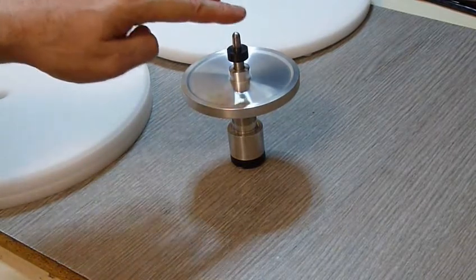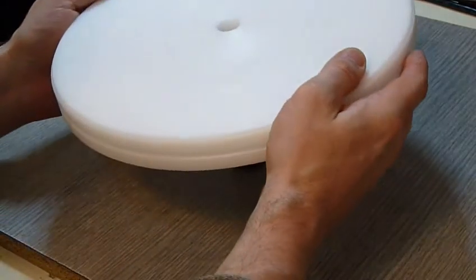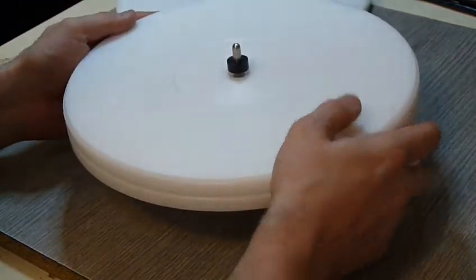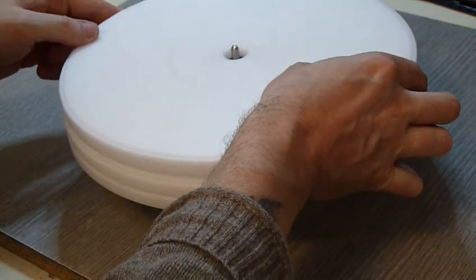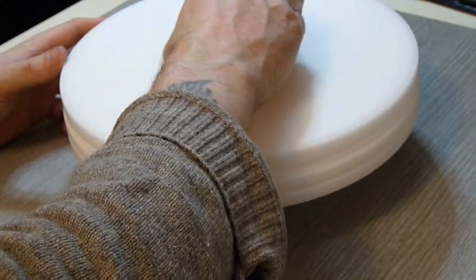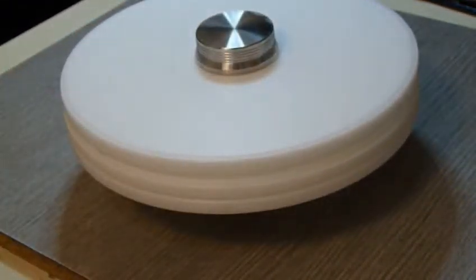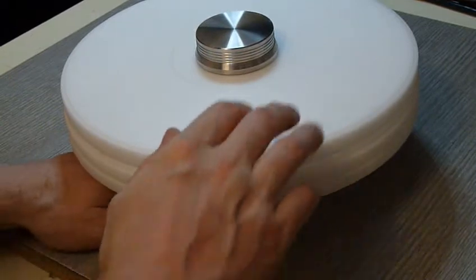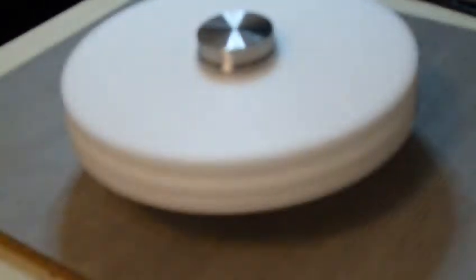So I'll stick the platters on it and we'll spin it up and have a look at it. Let's stop that, put the first platter on it. Now for this turntable, the motor drives the edge of the platter with a long belt, so it's got a groove on the edge of the platter on the bottom. I'm going to use the weight just to put a bit of pressure on the record, so just push it down into the platter.